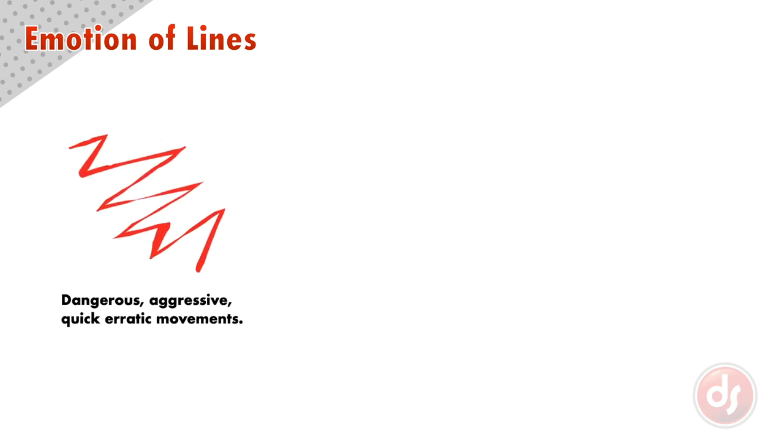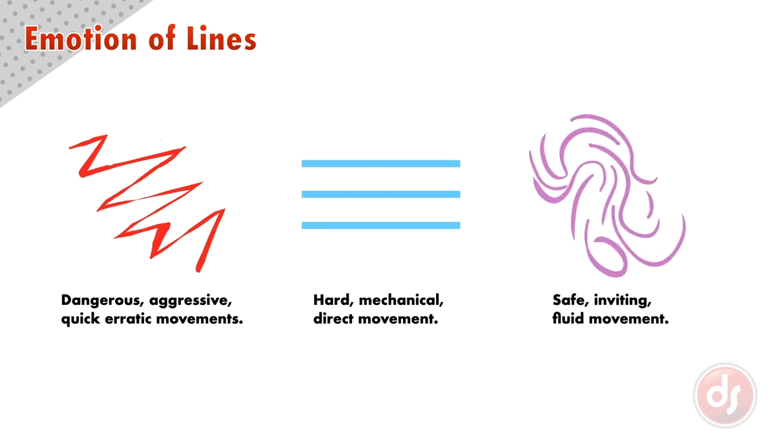The lines we choose to build our image from, whether actual or implied, will communicate emotion. Sharp jagged lines can feel dangerous or aggressive and create quick erratic movements in the eye. Straight lines feel hard, mechanical, and create a fast, direct movement in the viewer's eye. Curved lines can feel safe or welcoming and create a fluid movement in the viewer's eye.